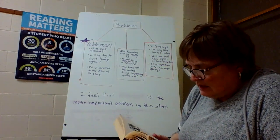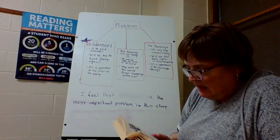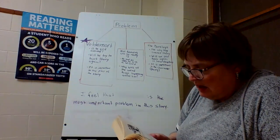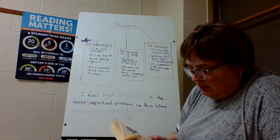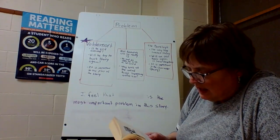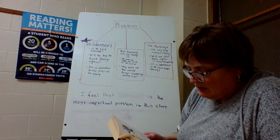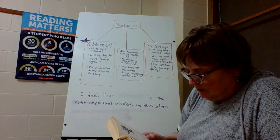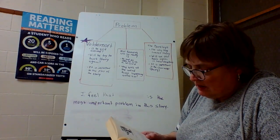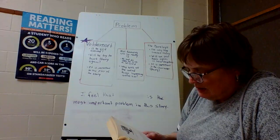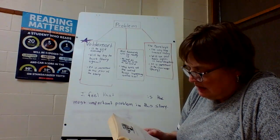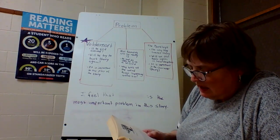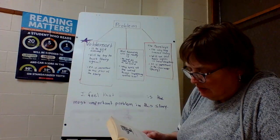Harry woke up early the next morning. Although he could tell it was daylight, he kept his eyes shut tight. 'It was a dream,' he told himself firmly. 'A dream — I dreamed a giant Hagrid came to tell me I was going to school for wizards. When I open my eyes, I'll be at home in my cupboard.' There was suddenly a loud tapping noise. Harry thought it was Aunt Petunia knocking on the door, his heart sinking. He still didn't open his eyes. It had been such a good dream.